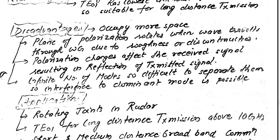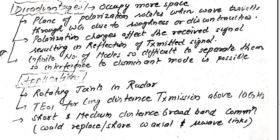There are also disadvantages of circular waveguides compared to rectangular waveguides. First, they occupy more space. Second, the plane of polarization rotates when the wave travels through the waveguide due to roughness or discontinuities, and polarization changes affect the received signal, resulting in reflection of the transmitted signal. Additionally, there are an infinite number of modes, making it very difficult to separate them, so interference with the dominant mode is always possible.